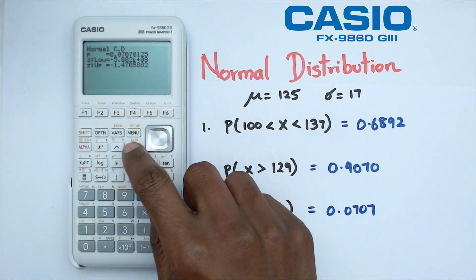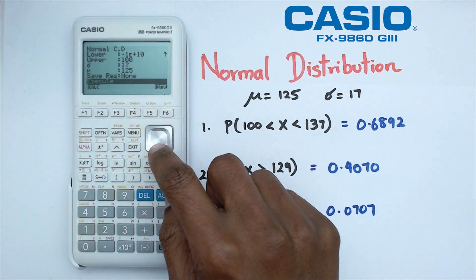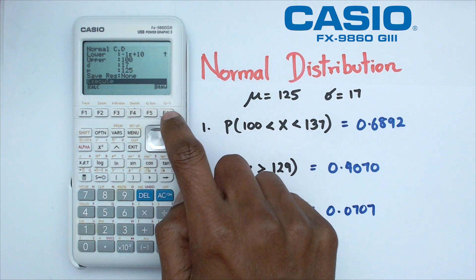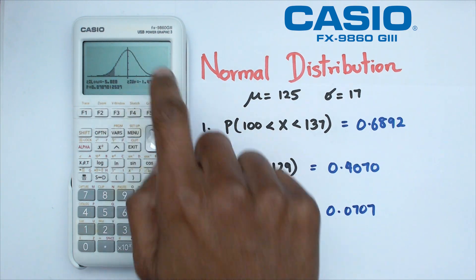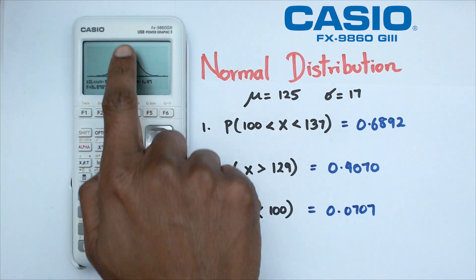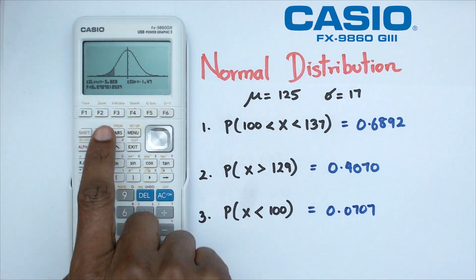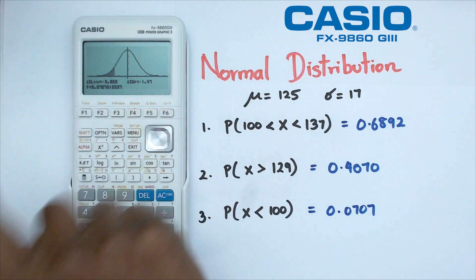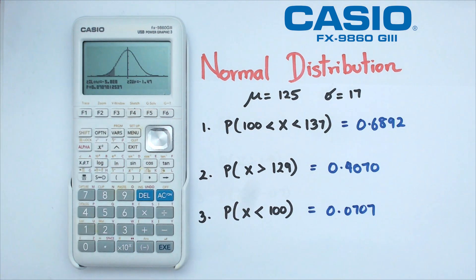Again, I'd like to just have a quick look at the diagram because that always helps me just to see if I'm on the right track. So if I click on F6, that's going to give me the diagram. And as you can see, 125 is in the middle there. So I would expect 100 to be here, and I'm looking for less than 100, which is 0.0707.